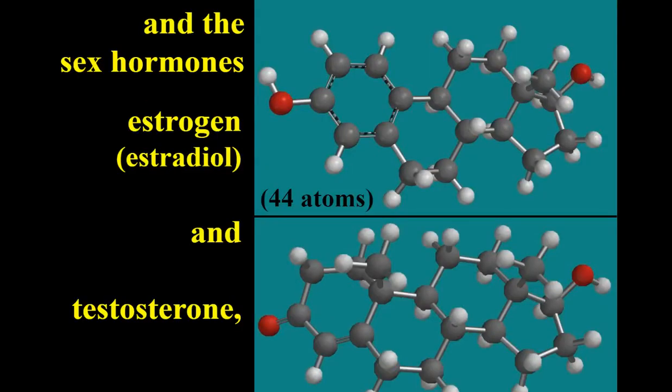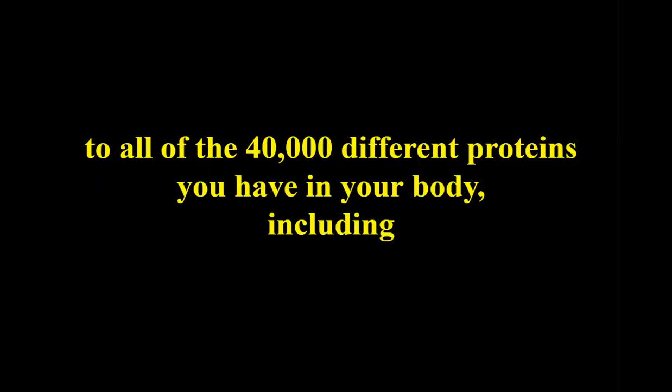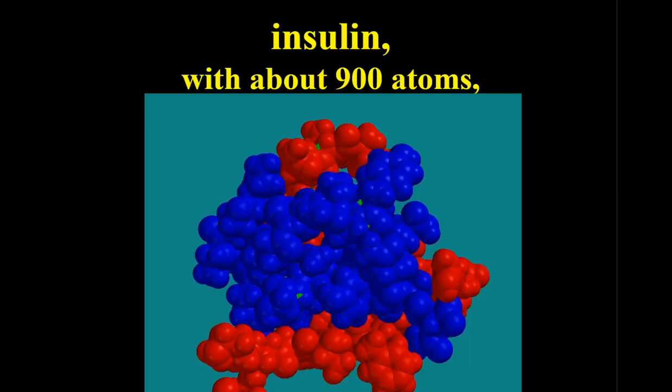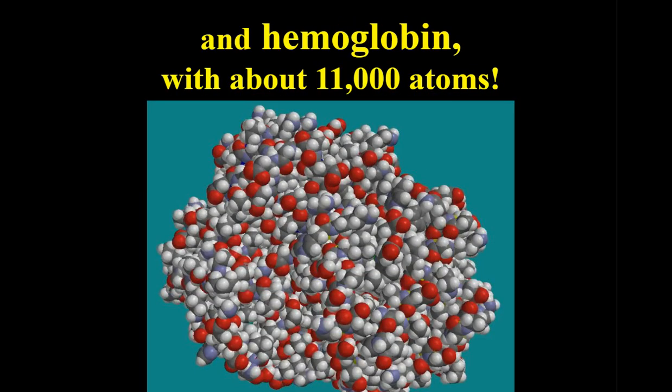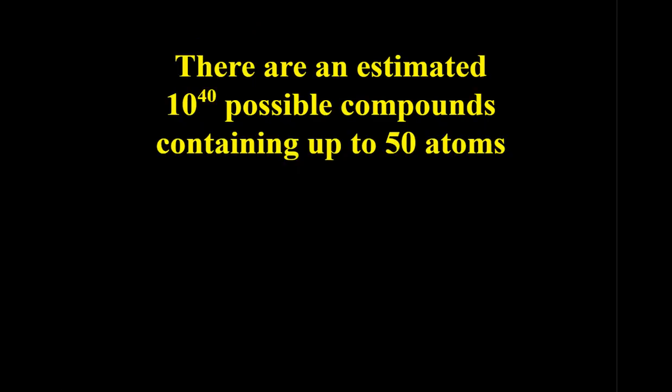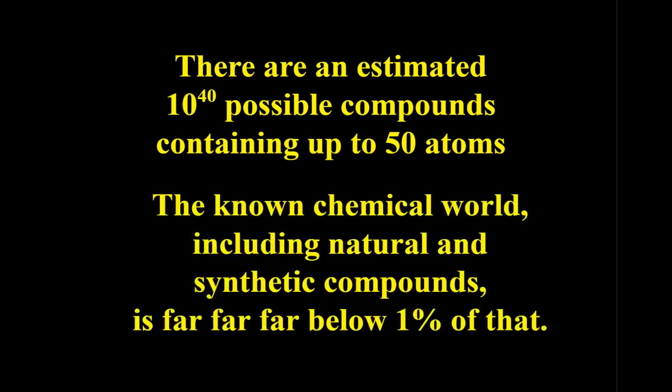Here's sex hormones, estrogen and testosterone. 40,000 different proteins you have in your body, including insulin, which is a large molecule, hemoglobin, which is a huge molecule. There are about 10 to the 40 possible combinations containing up to 50 atoms. We've only found less than 1% of those. So let me give you an example.